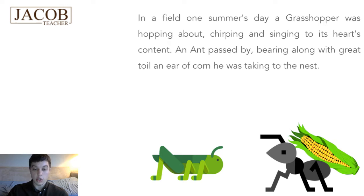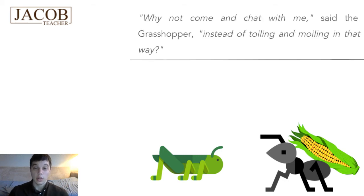So, the grasshopper is jumping around. He's singing. He's dancing. He's enjoying the day. The ant is struggling with an ear of corn on his back, taking it to the nest. Why not come and chat with me, said the grasshopper, instead of toiling and moiling in that way.